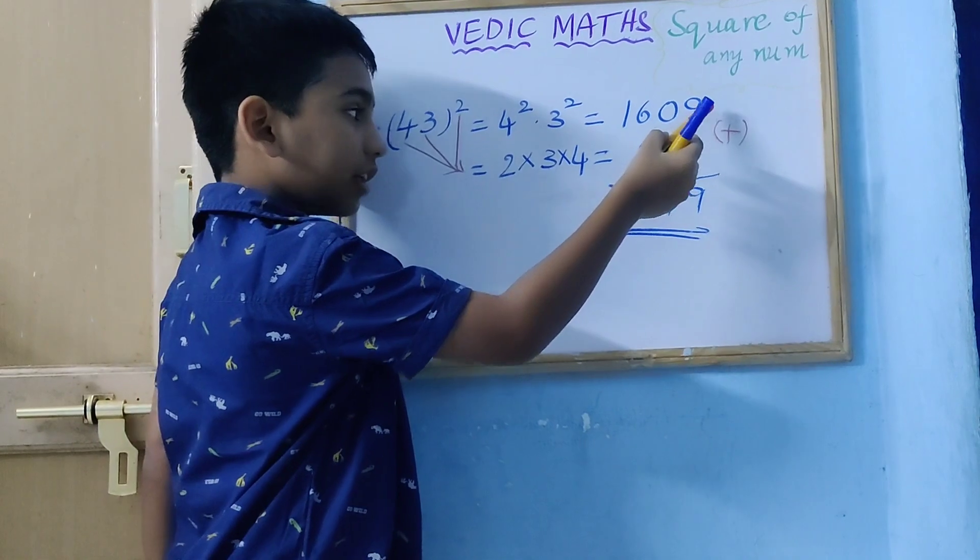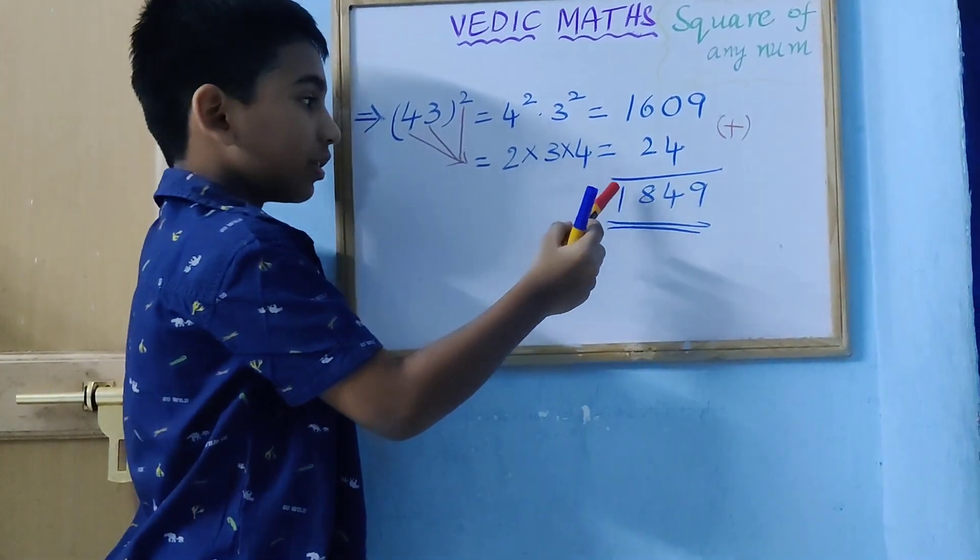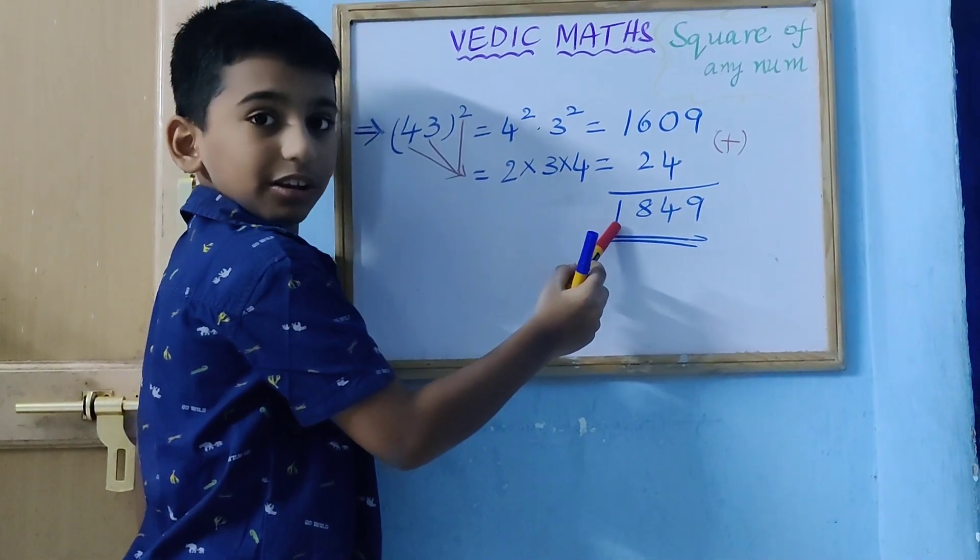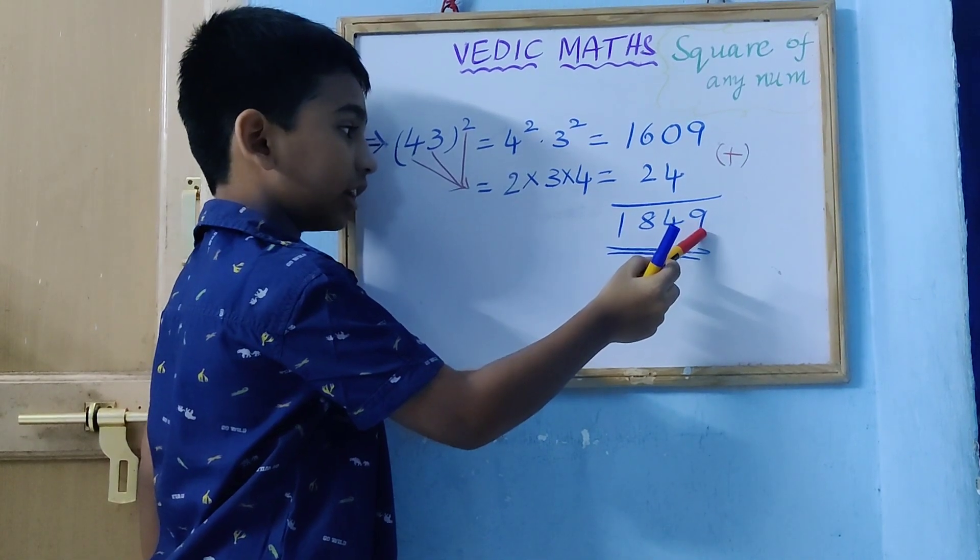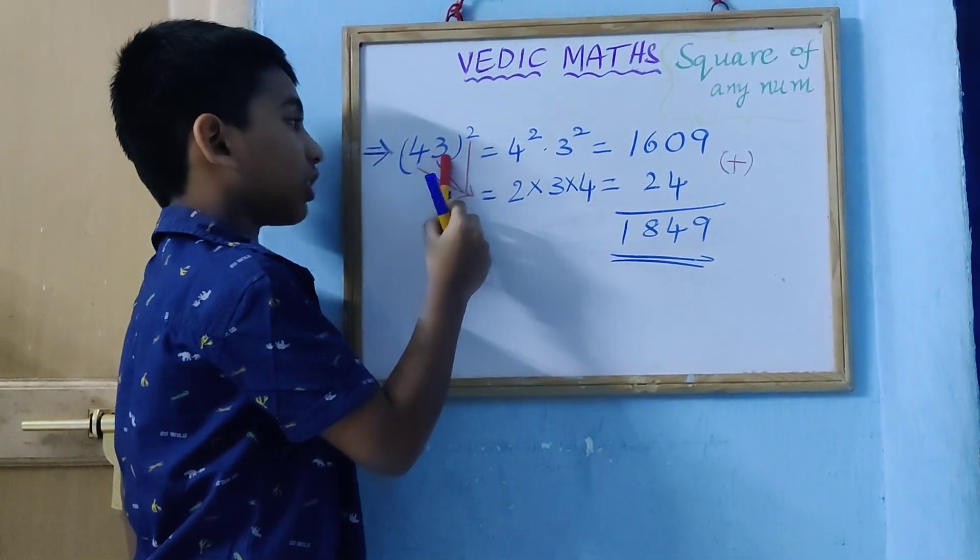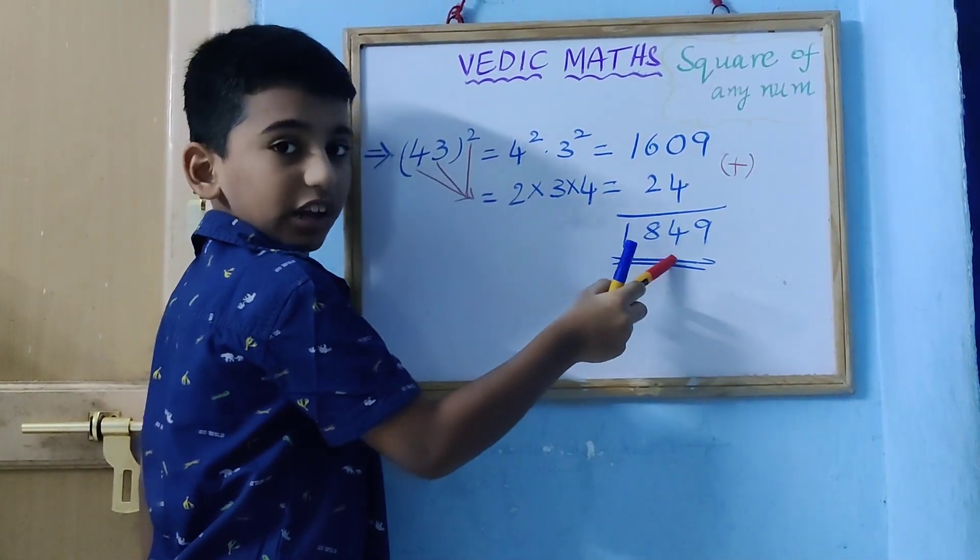Then, add these numbers. So, we get the result is 1849. Therefore, 43 square equal to 1849.